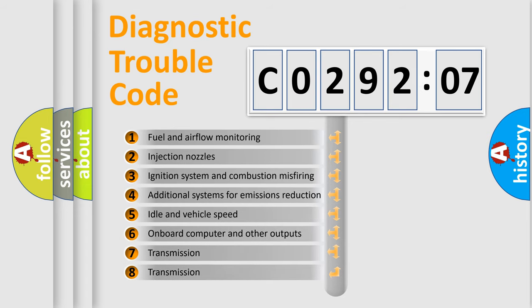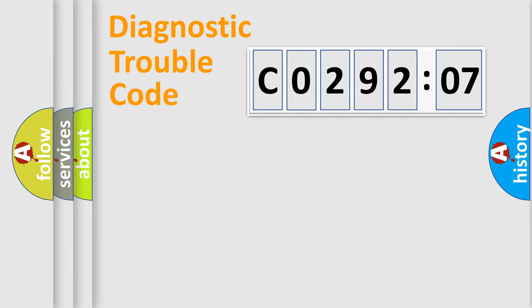The third character specifies a subset of errors. The distribution shown is valid only for the standardized DTC code. Only the last two characters define the specific fault of the group.